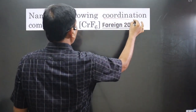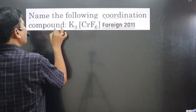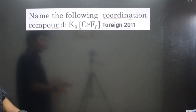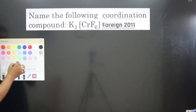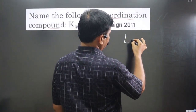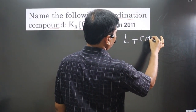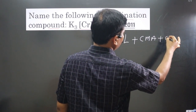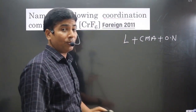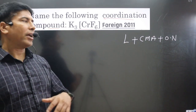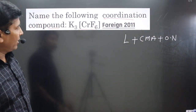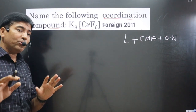The question says: name the following coordination compound. To name a complex, we follow this order: first, name the ligands; then the central metal atom; then write the oxidation number of the central metal atom in Roman numerals. The counter ion can appear at the front or at the end.